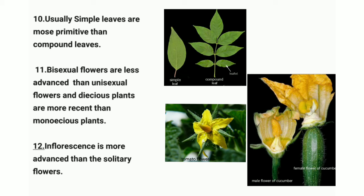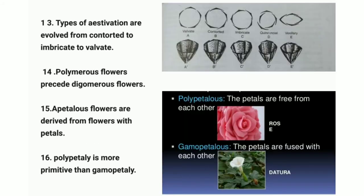Point twelve: inflorescence is more advanced than solitary flowers. Inflorescence is the arrangement of flowers on a plant. Point thirteen: types of aestivation have evolved from contorted to imbricate to valvate, as can be seen in the image.